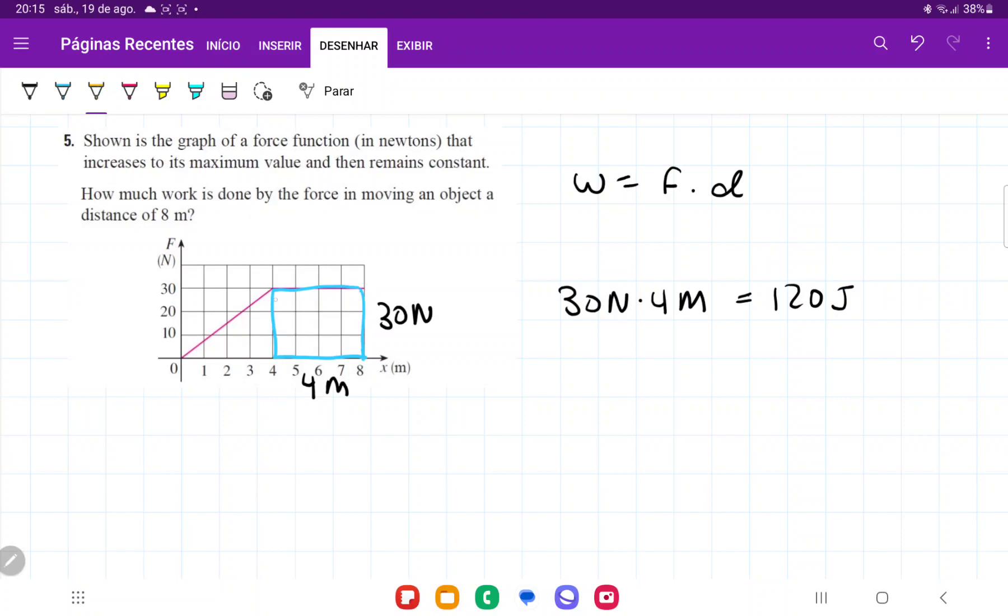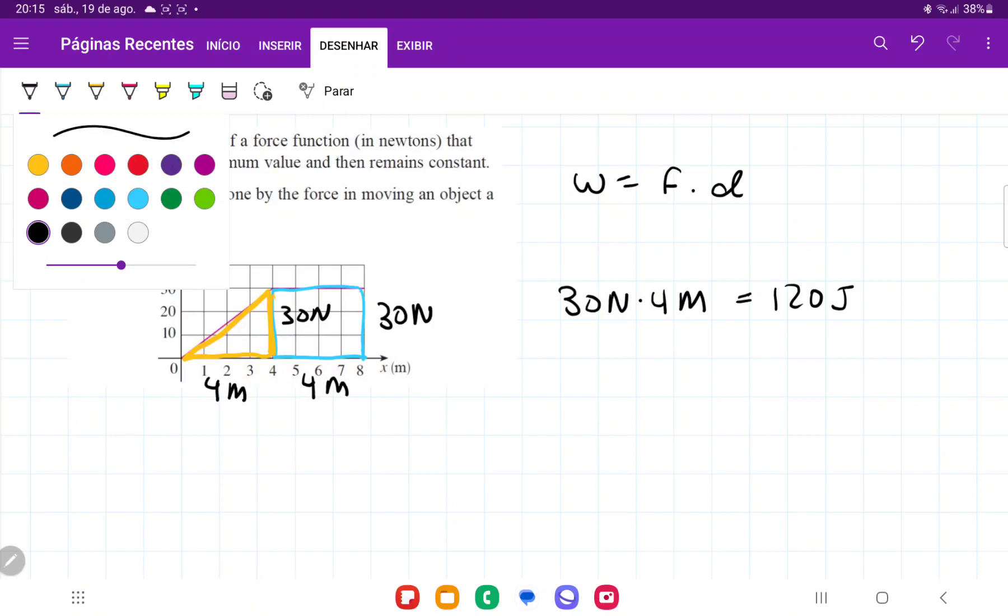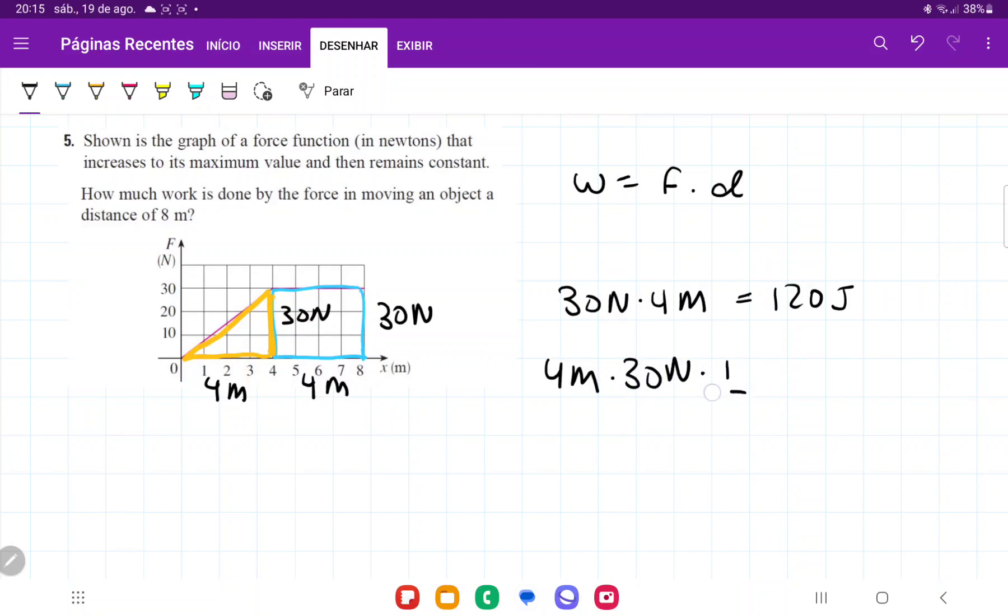And then we have to look at the second part over here. Now, the second part is just a triangle whose base is still 4 meters and the height is also 30 newtons. But now, because it is a triangle, it's not base times height. It's going to be base, so 4 meters, times height, which is 30 newtons, times one-half. Because we do have a triangle, right? And so this is going to give us 4 times 30, which is 120 times one-half, which is 60 joules.